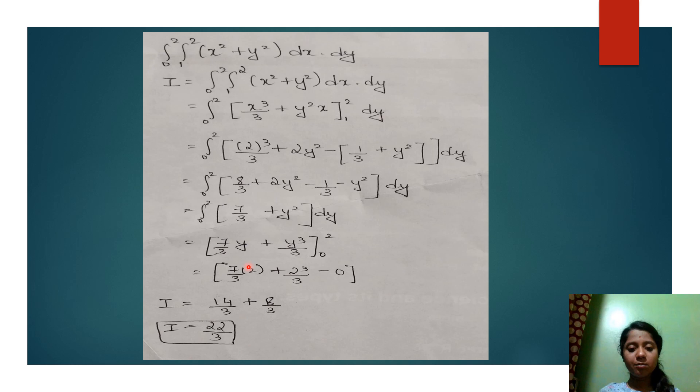Again the same procedure. We apply the upper limit to the equation in the place of y, and subtract the same equation by applying the lower limit in the place of y. 7 by 3, y in place of y we are substituting 2, plus y cube will be 2 cube by 3, minus, since y should be substituted by the lower limit 0.